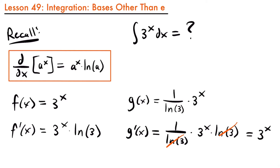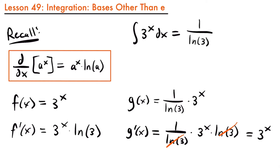Remember what I said earlier — when we are integrating a function, we are trying to find a function whose derivative is that function in the integral. We just took the derivative of a function whose derivative is 3 to the power of x. So the integral of 3 to the power of x is going to be equal to 1 divided by the natural log of 3 times 3 to the power of x plus c. This is the anti-derivative of 3 to the power of x.